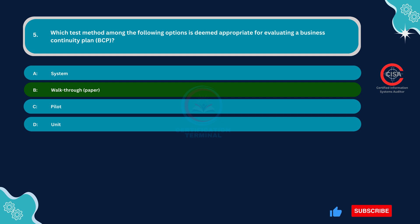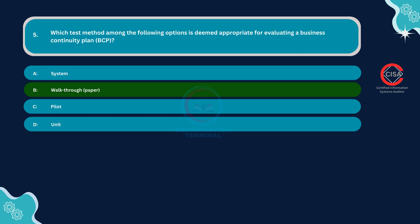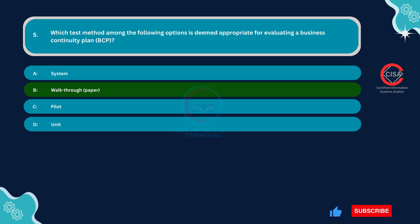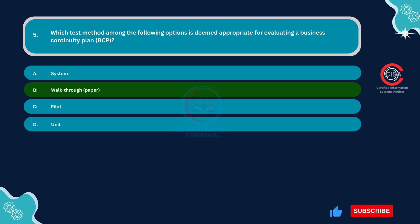The walk-through paper method involves a facilitated discussion where participants step through the BCP scenario using the documented plan. It allows for identifying gaps, inefficiencies, and communication issues without actually disrupting operations. This approach is a cost-effective way to assess the BCP's overall flow, decision-making processes, and resource allocation plans. From a CISA perspective focused on cost-effective initial evaluation, a walkthrough test allows for identifying weaknesses and improving the plan before conducting more disruptive tests like pilot exercises.